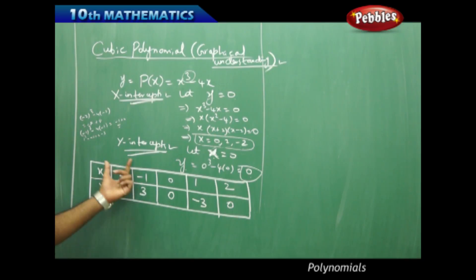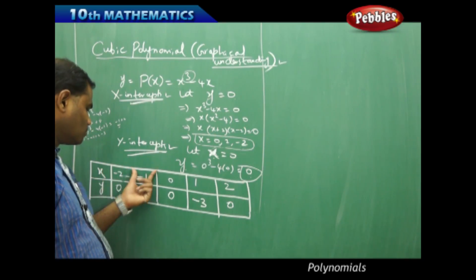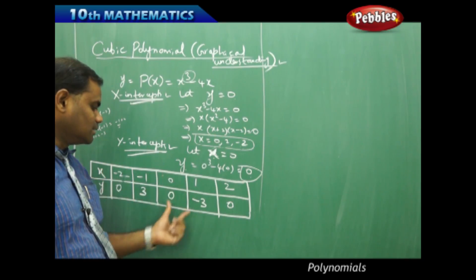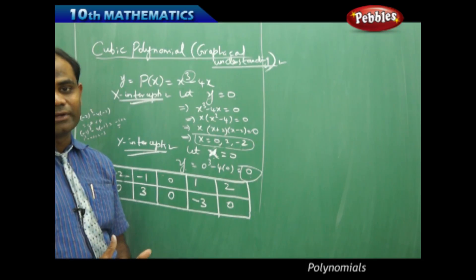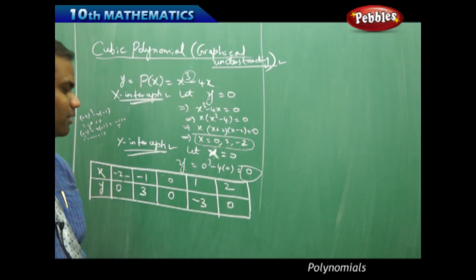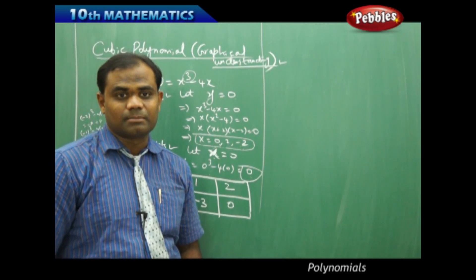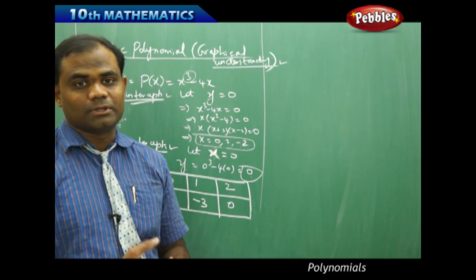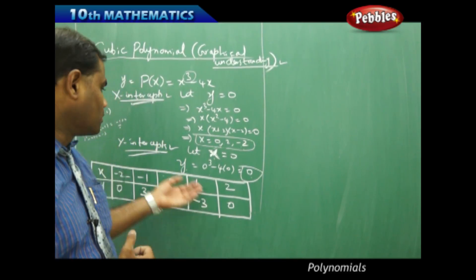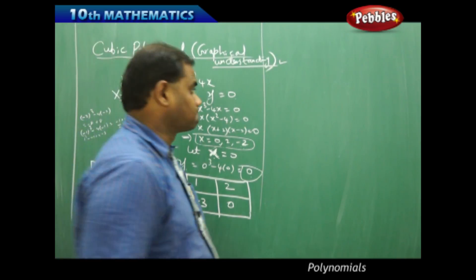So I get the corresponding points: negative 2 comma 0, negative 1 comma 3, 0 comma 0, 1 comma negative 3, and 2 comma 0. Let me now draw these points on a real x-y coordinate system to see what shape is obtained for this cubic polynomial.